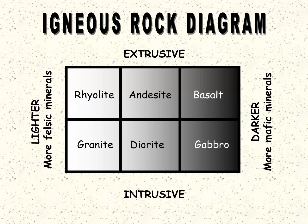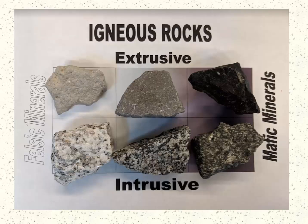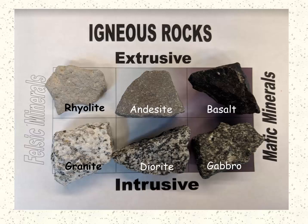What we just went over can be summarized by this simple igneous rock diagram. At the top we have the extrusive variety, at the bottom the intrusive. On the left, the lighter rocks with more felsic minerals, and on the right, the darker rocks with more mafic minerals. On the left side of the diagram are the rhyolite and granite; in between, the andesite and diorite; and on the right-hand side, the basalt and gabbro with more mafic minerals. You can see the gradually increasing darkness from left to right, and we can also see the increasing size of the crystals from top to bottom.